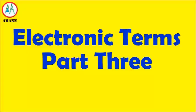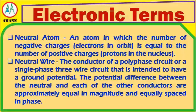This is Electronic Terms Part 3. Neutral Atom is an atom in which the number of negative charges is equal to the number of positive charges.